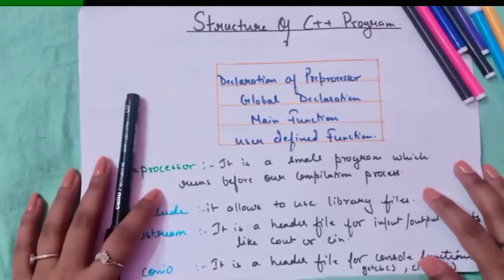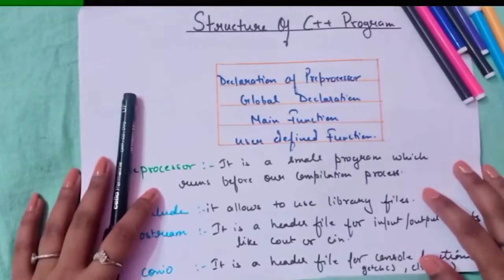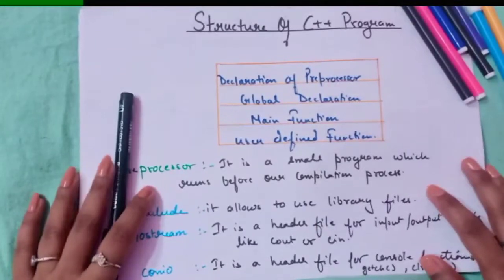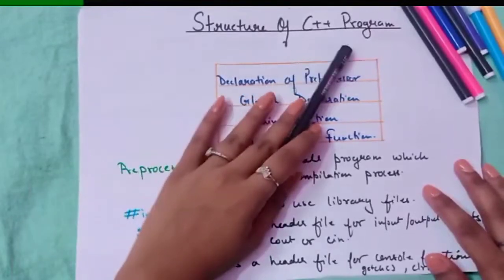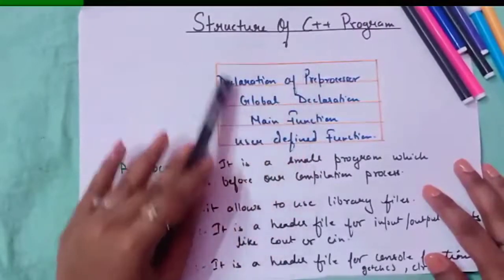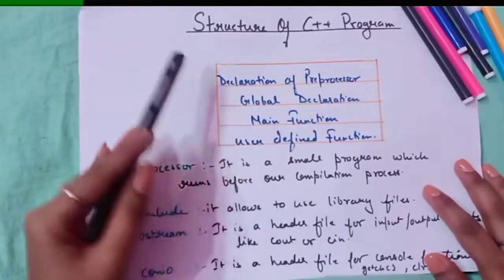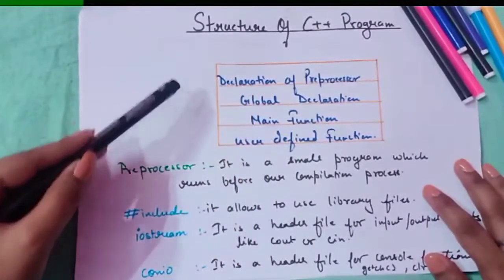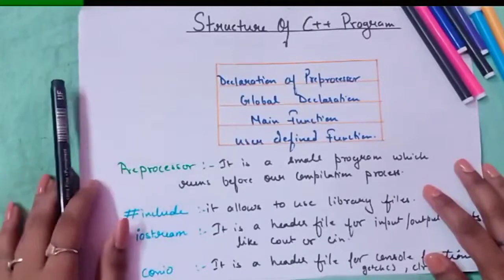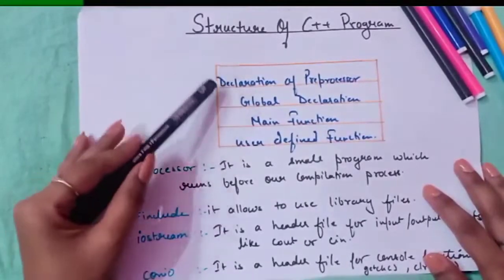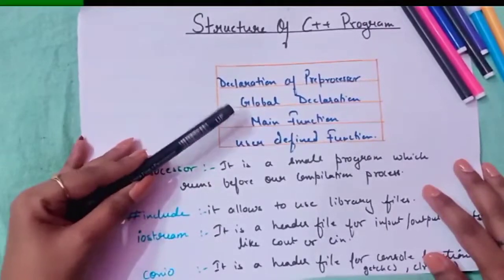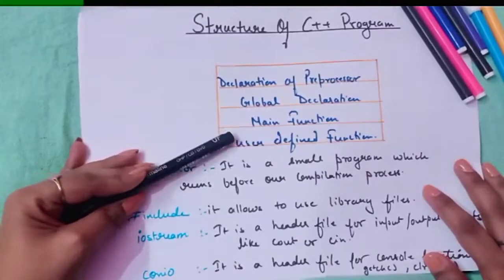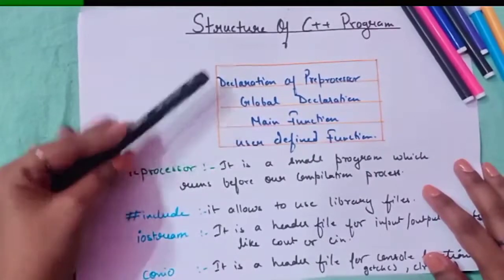Hi everyone, this is Rashika Pandey. Welcome to the online classes of C++. In my previous video I discussed the building blocks of C++. Today we will see what is the structure of a C++ program — the main things required: declaration of preprocessor, global declaration, main function, and user-defined function.